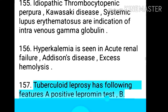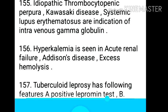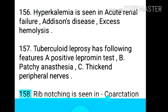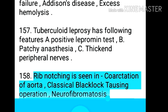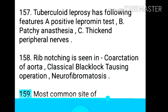Point 158: Tuberculoid leprosy has the following features — positive lepromin test, patchy anesthesia, and thickened peripheral nerves. Point 159: Rib notching is seen in coarctation of the aorta, classical Blalock-Taussig operation, and neurofibromatosis.